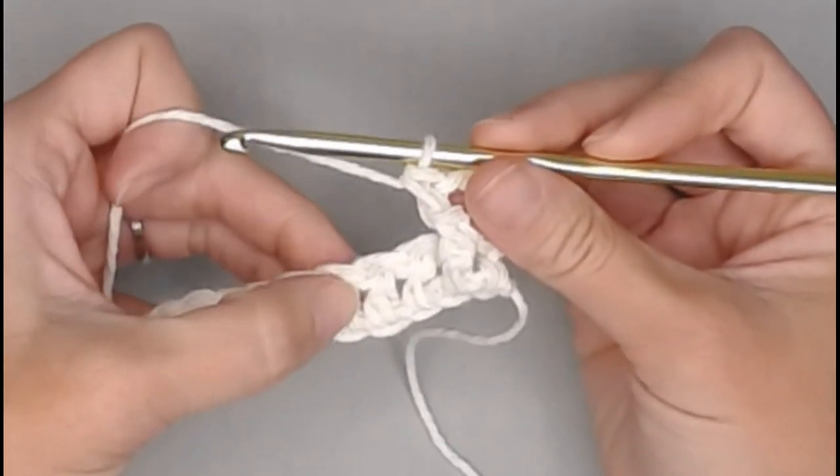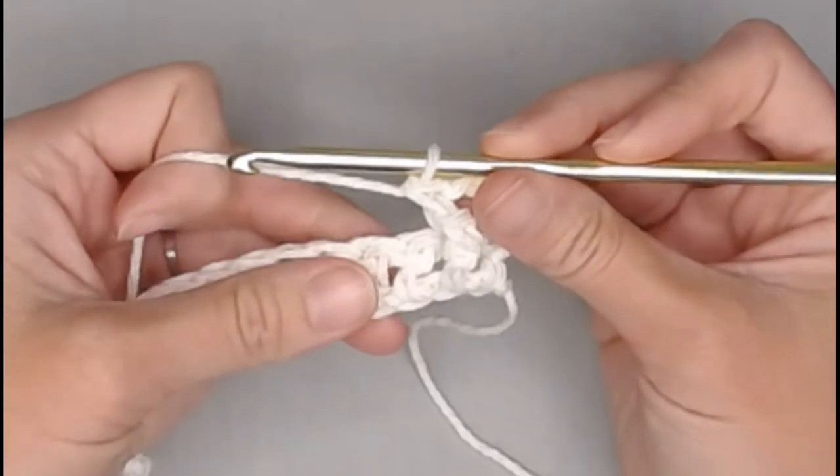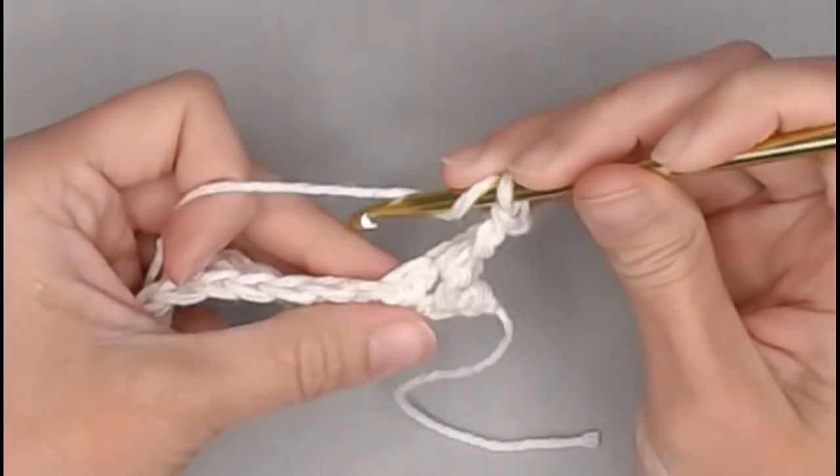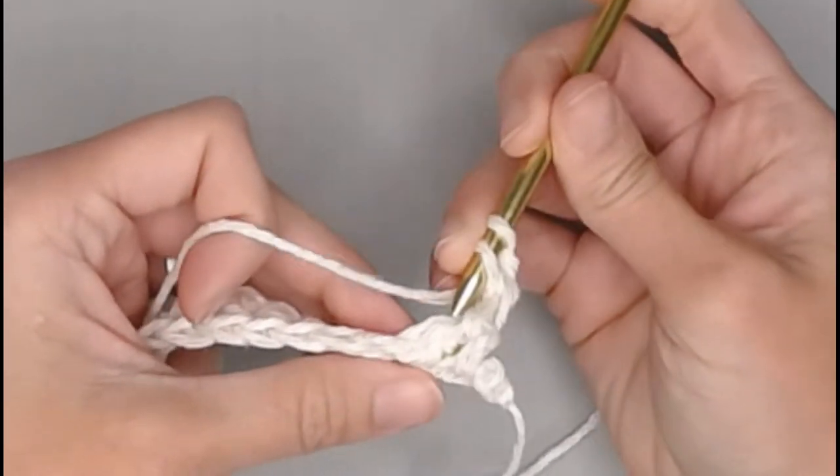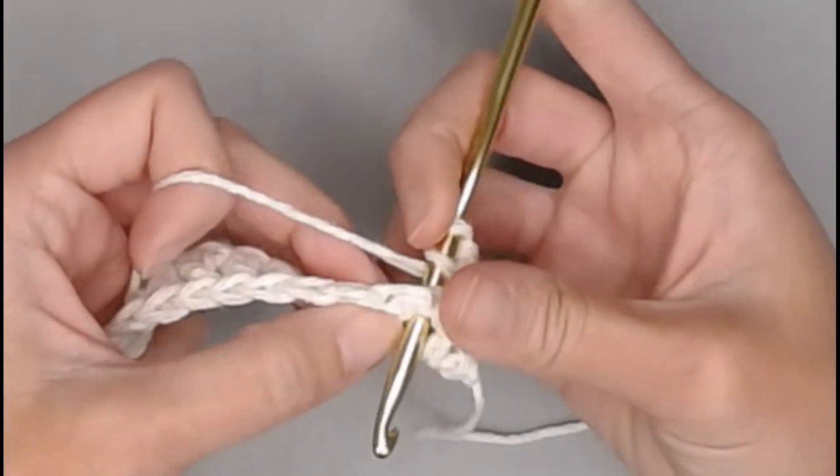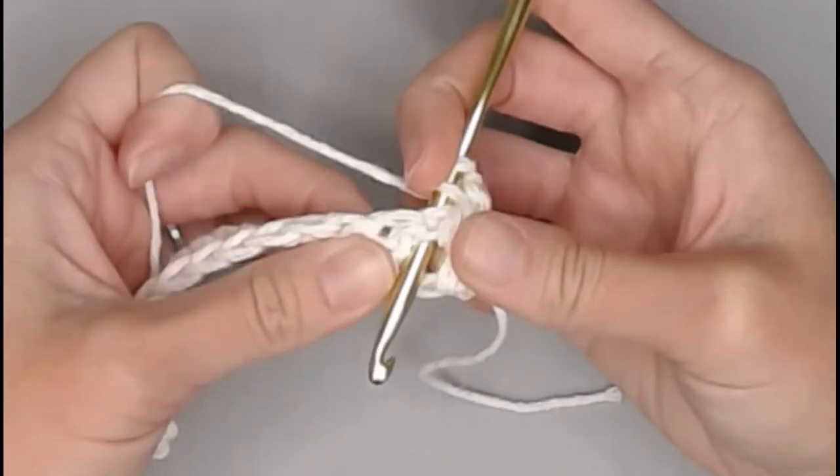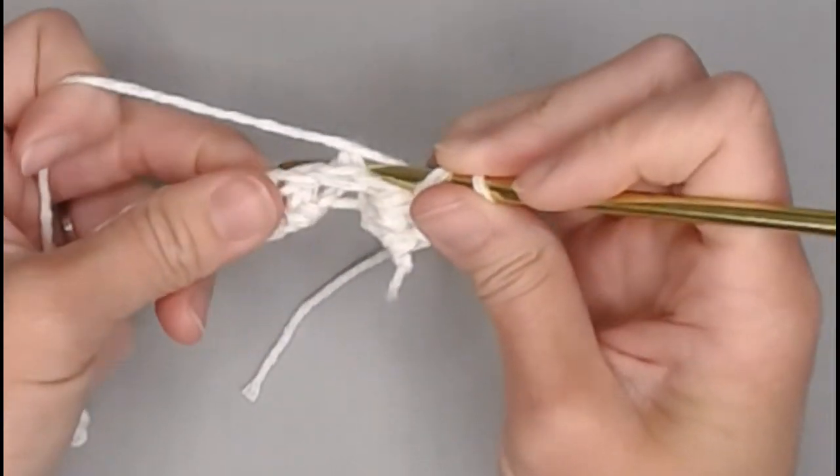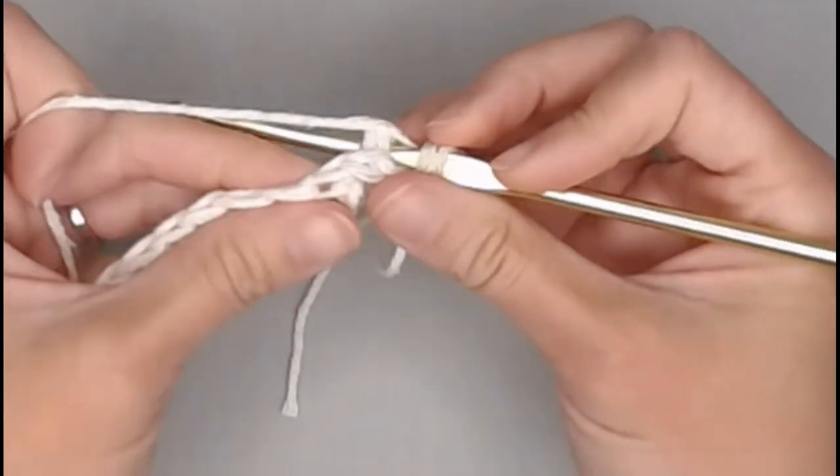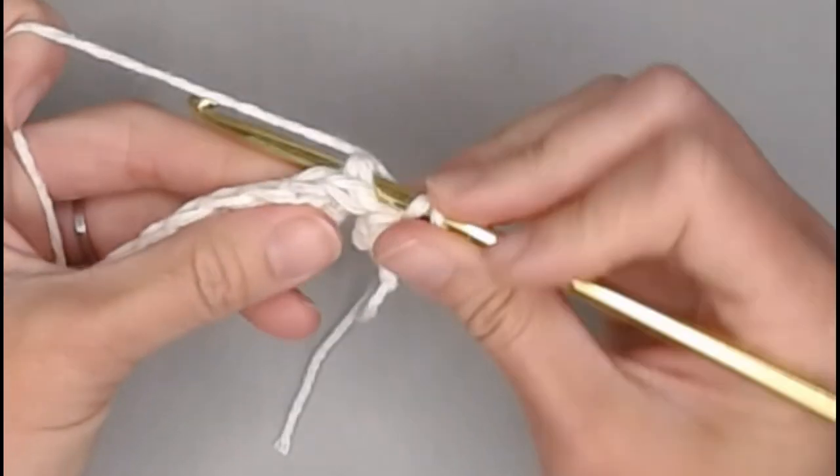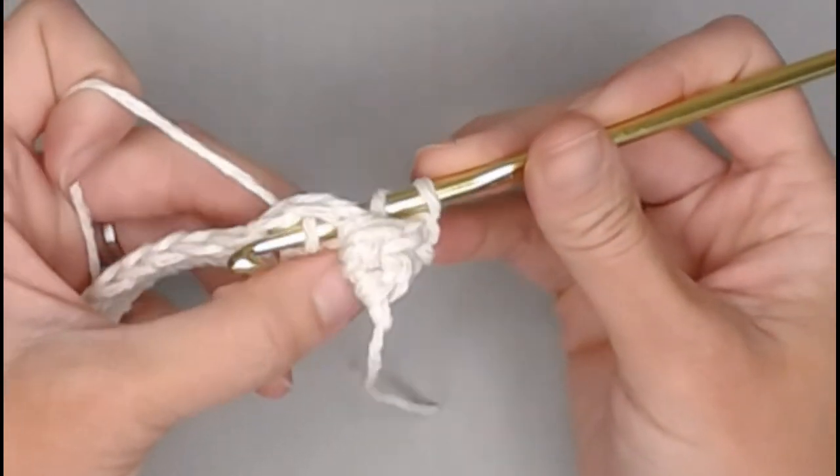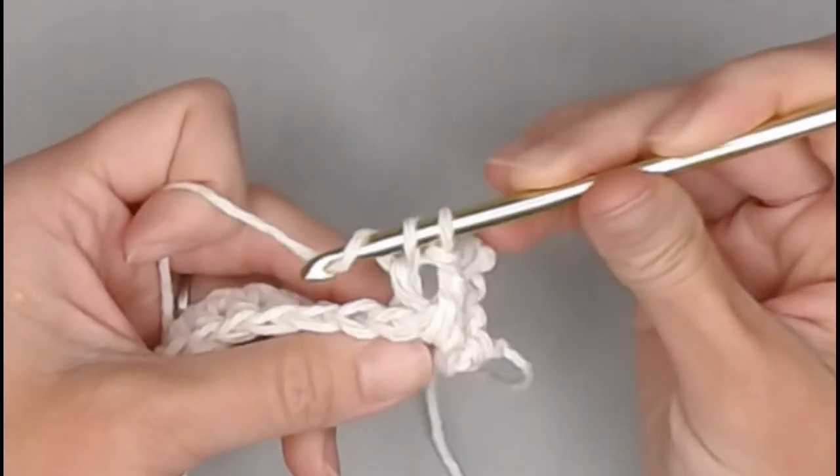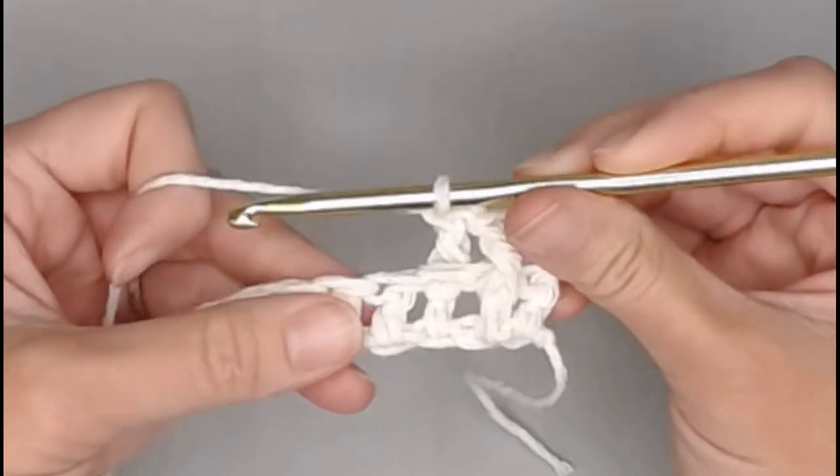The next three stitches we will back post double crochet around those stitches. So yarn over, insert your crochet hook from the back to the front of that space between the two stitches. Push that double crochet back and go through the next space between those two stitches. Yarn over, pull through and pull all the way through. Yarn over, pull through two. Yarn over, pull through two. And that is our back post.